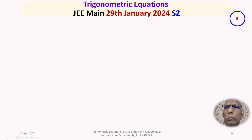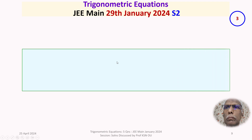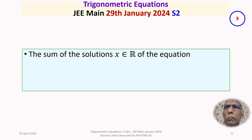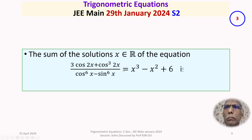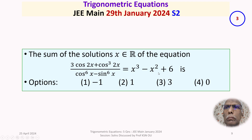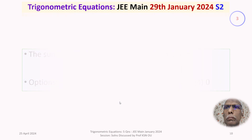The third question appeared in the JEE Main exam held on 29th January 2024 in the second shift. The question is: the sum of the real solutions (x ∈ ℝ) of the equation (3cos2x + cos³2x)/(cos⁶x - sin⁶x) = x³ - x² + 6 is — with four options given.